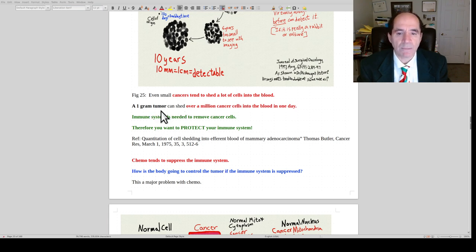This is what I was saying, that one gram of tumor, much smaller than a grape, can shed over a million cancer cells into the blood in one day. Here's the article that was showing that. So the immune system has to remove all those cells. That's why we want to have a good immune system.